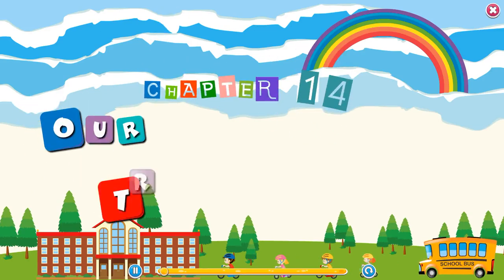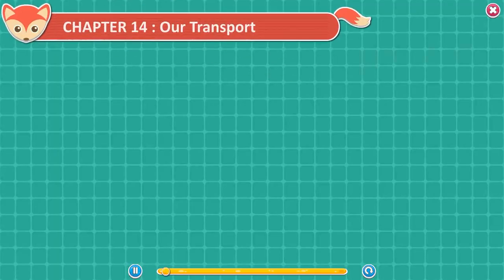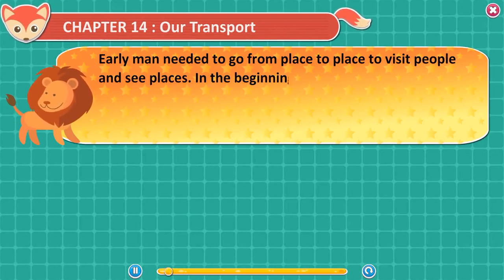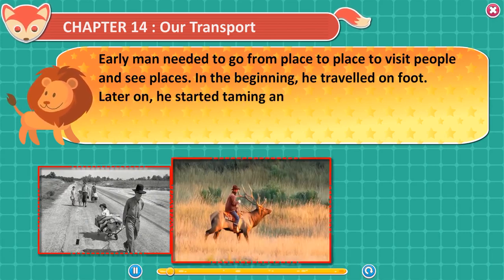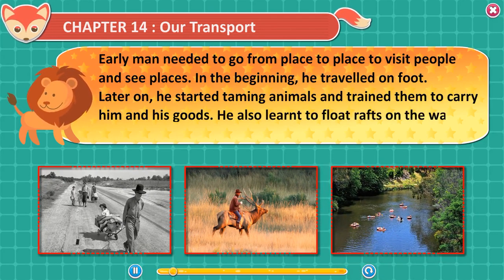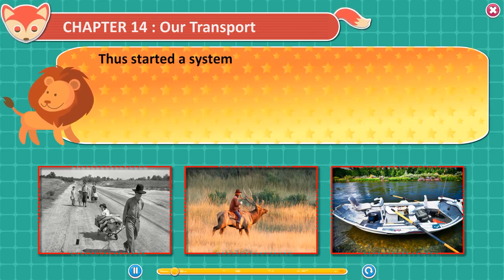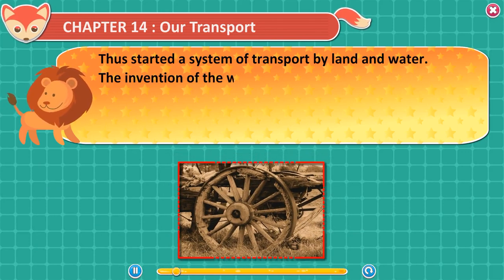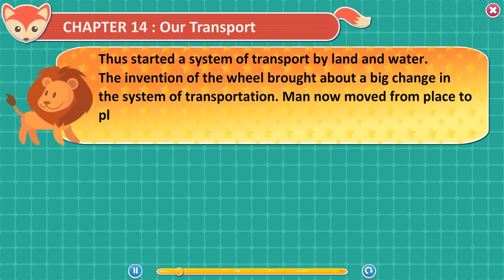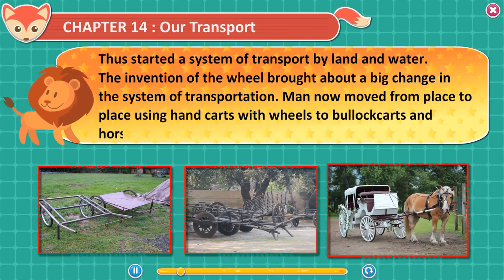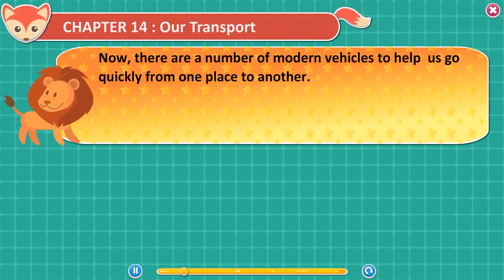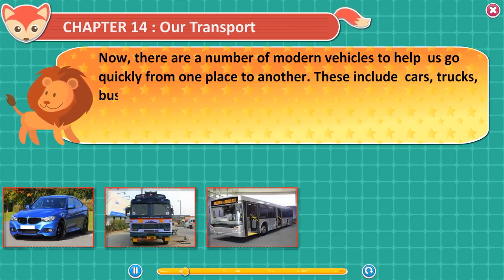Chapter 14: Our Transport. Early man needed to go from place to place to visit people and see places. In the beginning, he travelled on foot. Later on, he started taming animals and trained them to carry him and his goods. He also learnt to float rafts on rivers and streams, starting a system of transport by land and water. The invention of the wheel brought about a big change in transportation — man moved from hand carts to bullock carts and horse carriages. Now, there are a number of modern vehicles like cars, trucks, buses, trains, and aeroplanes.